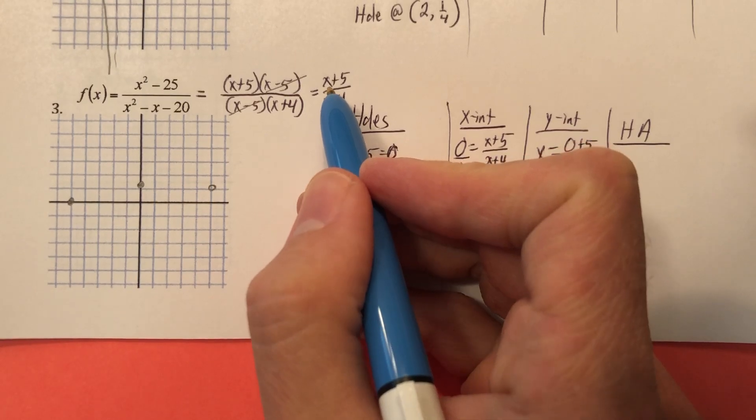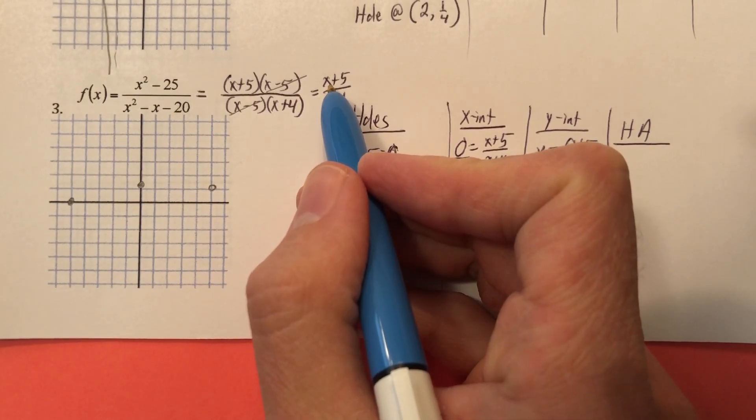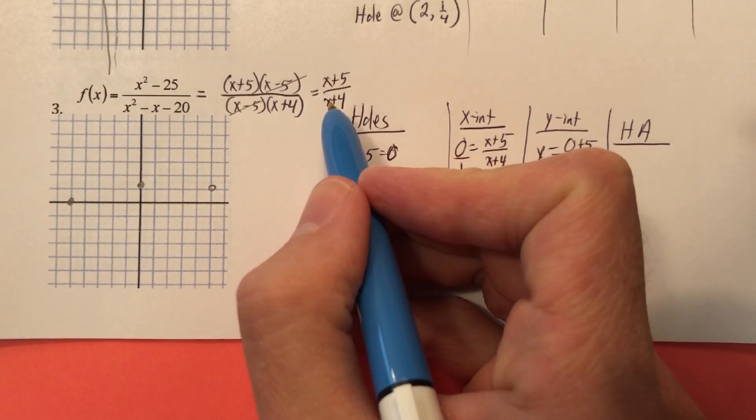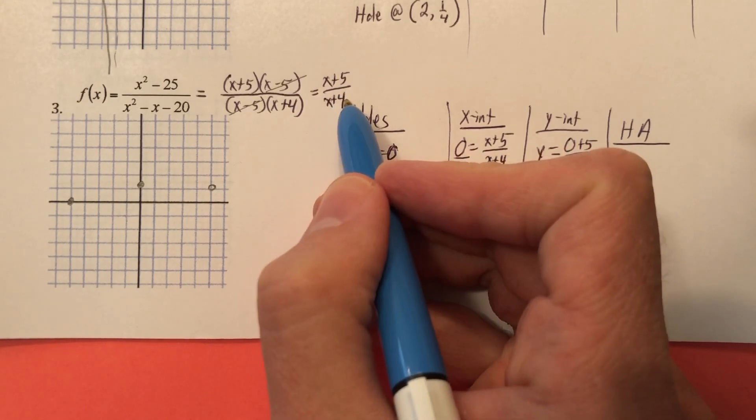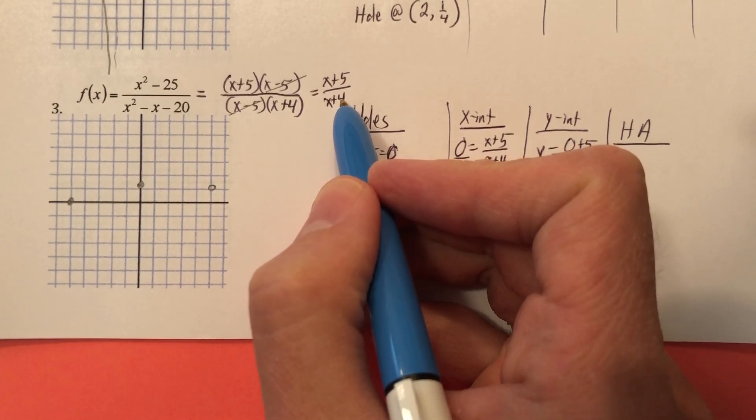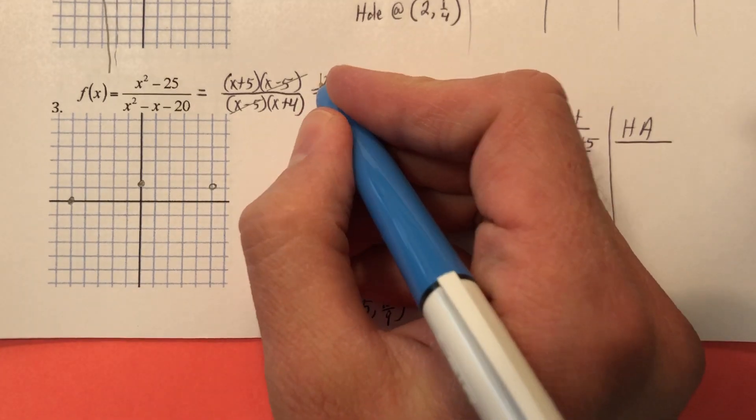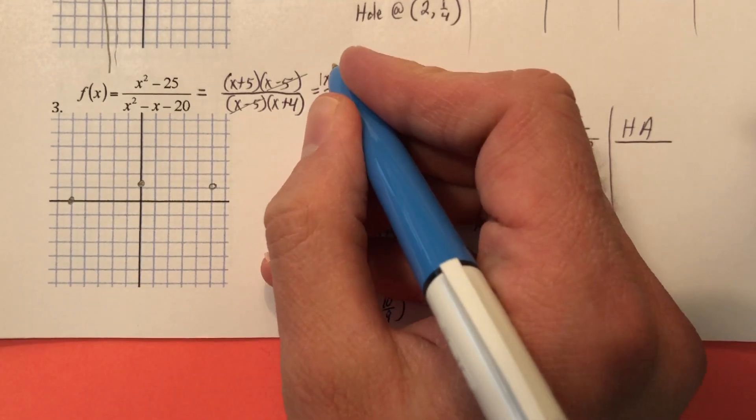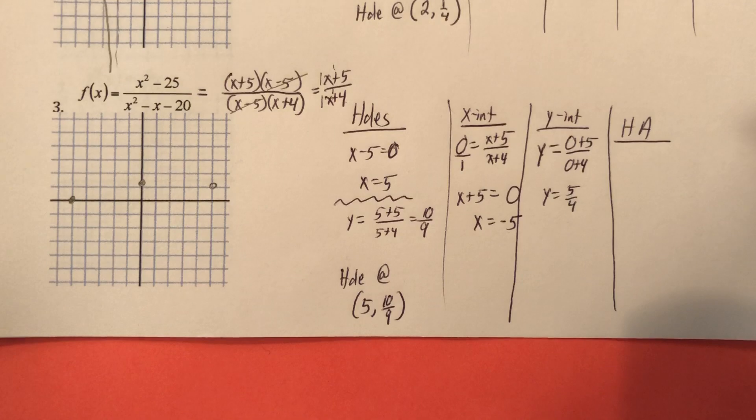If I was to plug in enormous numbers, this is the way I used to explain it. It was confusing to a lot of people. If I was to plug in big, big numbers for X, like 100, I'd have 105 divided by 104, right? 105 divided by 104 is really close to 1. So because this is a 1 and this is a 1 and this is a 1 and this is a 1, then the answer is 1 because they divide out. Okay?